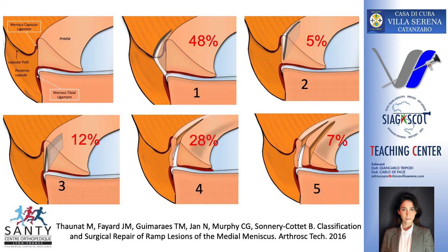Five types of RAMP lesions have been described and four structures are mainly involved: the capsule, the posterior horn of the medial meniscus, the meniscal capsular ligament, and the meniscal tibial ligament.